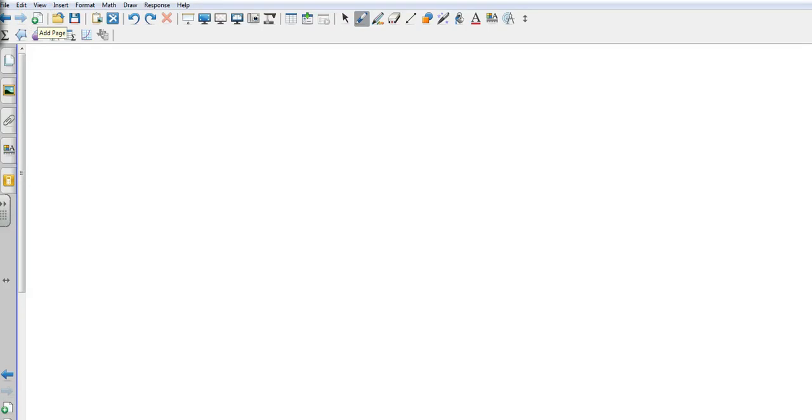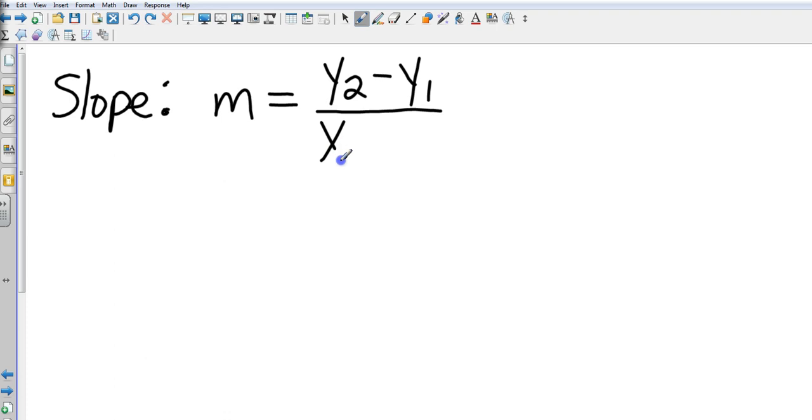Well, we have a slope formula. Slope is going to be represented as m from now on, m is the letter they use for slope. And the slope formula is y2 minus y1 all over x2 minus x1, okay?